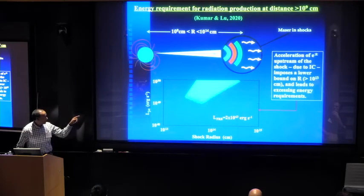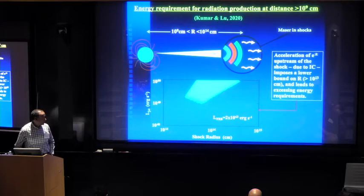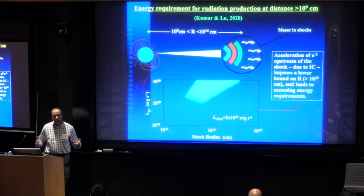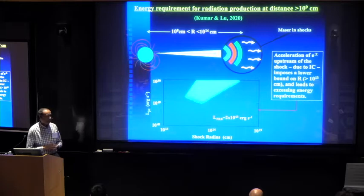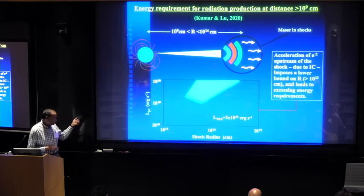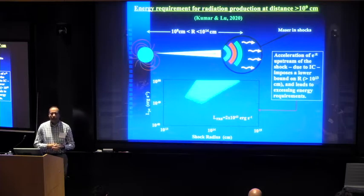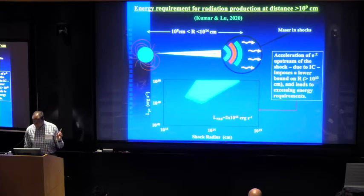Wenbin also showed this particular graph. The only point here I'd like to mention is that in principle one can have the FRB at large distances, but that requires the energy to be very high. This is the parameter space showing the distance of the shock front from the compact object and the luminosity requirement. So it's a very high energy requirement.